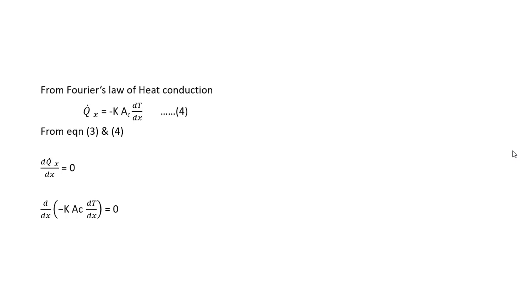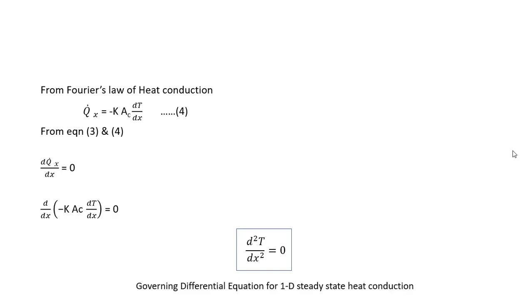Since the material properties are constant throughout — the conductivity k is constant and the cross section A_c remains constant along the fin — k·A_c is constant. Therefore the equation simplifies to d/dx of (dT/dx) equals zero, that is d²T/dx² equals zero. This is the governing differential equation for 1D conduction steady state heat transfer.